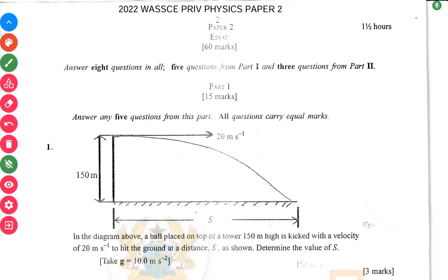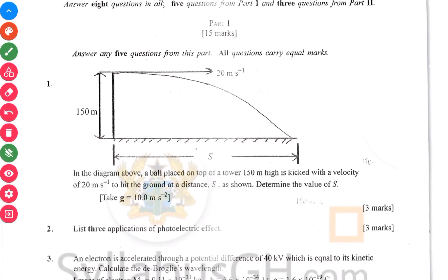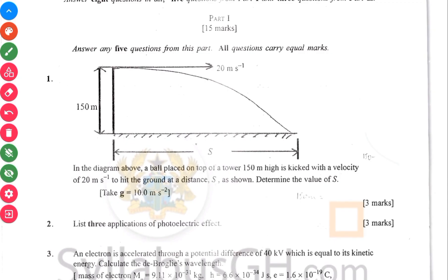2022 WASSCE private physics exam paper 2. Now the first question has to do with projectile motion.